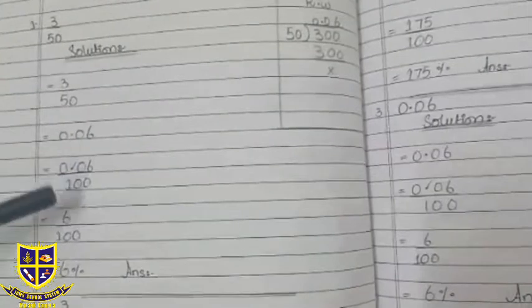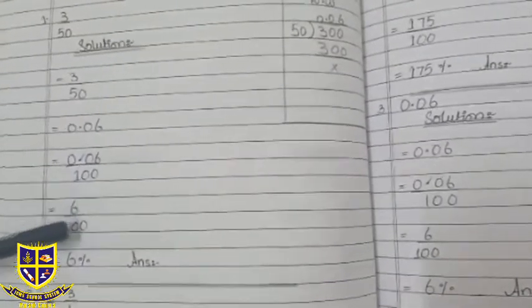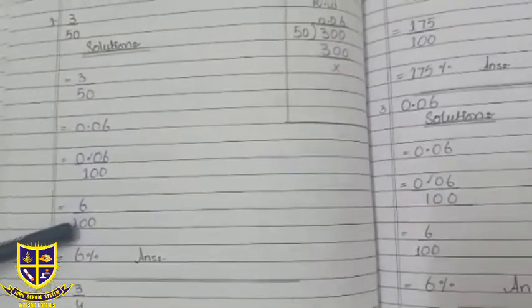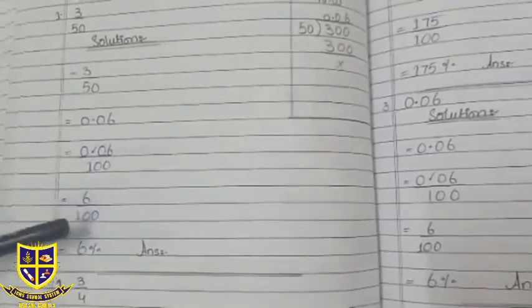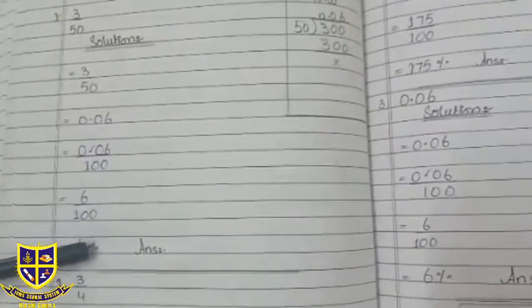Now we write 6 by 100. So if we have 100 in the denominator, we can write this as a percentage.